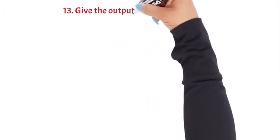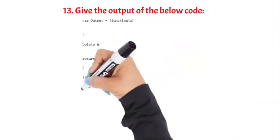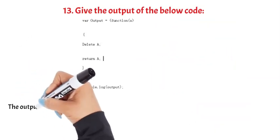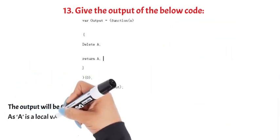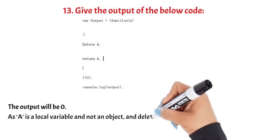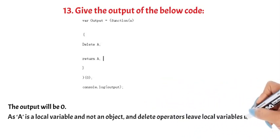Question 13: Give the output of the below code. The output will be 0, as A is a local variable and not an object, and DELETE operators leave local variables unaffected.